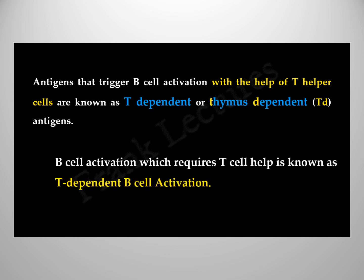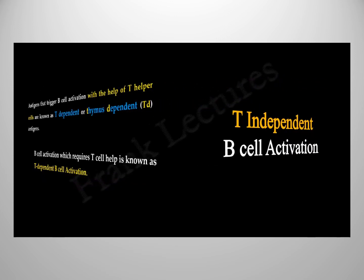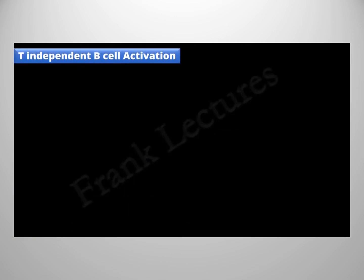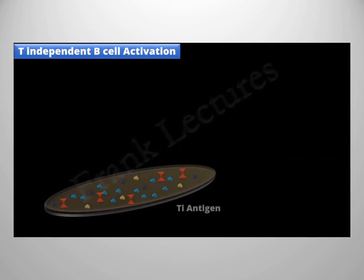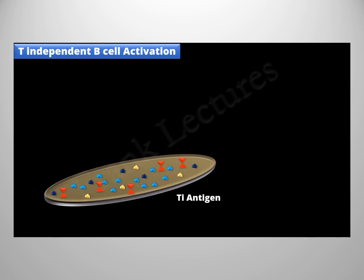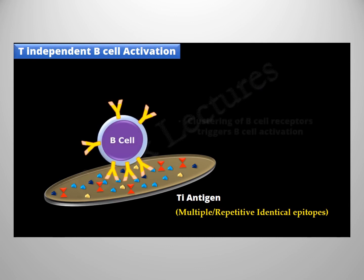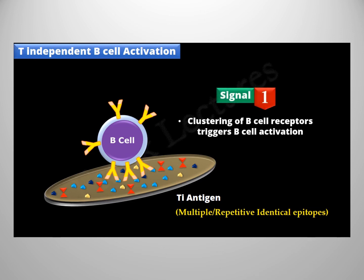In T independent B cell activation, the antigen is multivalent — it is composed of repetitive and identical epitopes. When a B cell recognizes and binds to this antigen, clustering of B cell receptors triggers B cell activation. This clustering is the first signal for T independent activation.